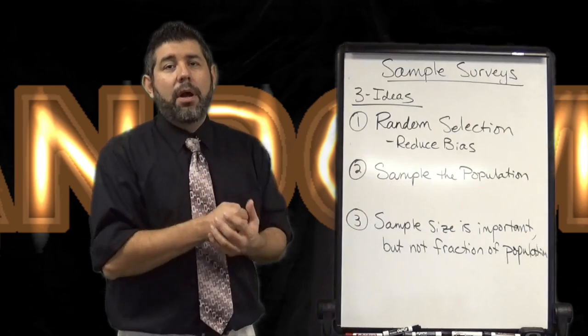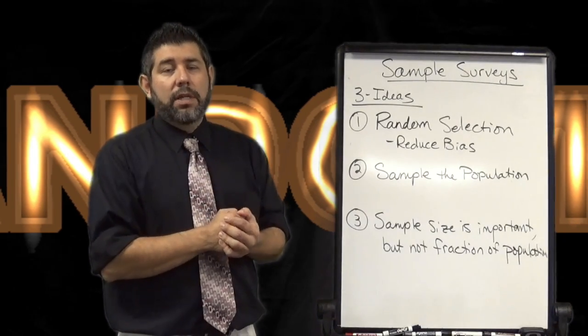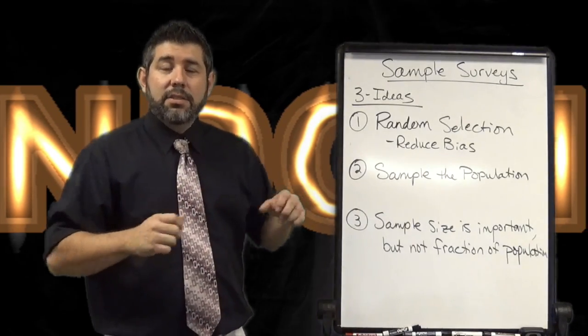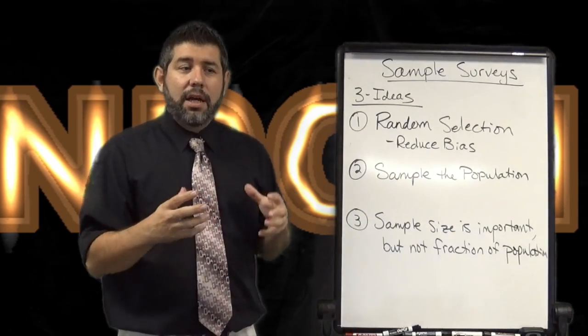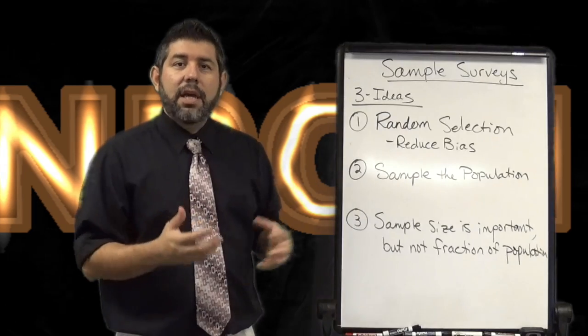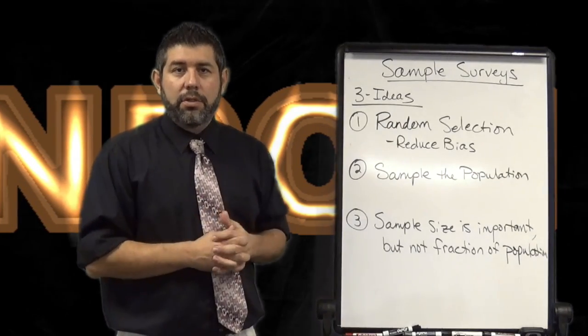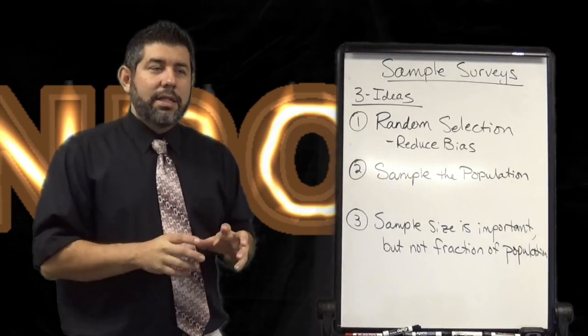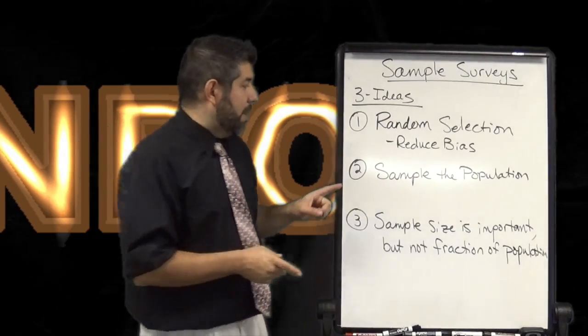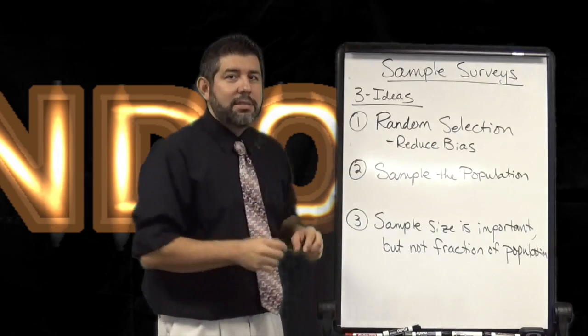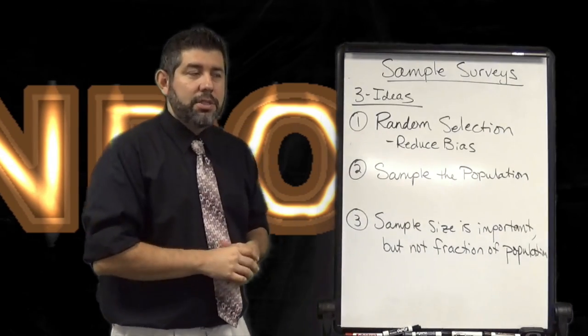Bias is anytime that we have a survey that either underestimates or overestimates what is actually happening in that population. If that happens, then we have a problem with our survey. So randomly selecting is going to give us a good sample. Now let's talk about why we want to sample the population.